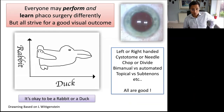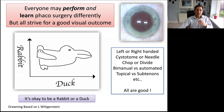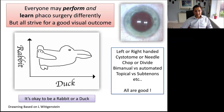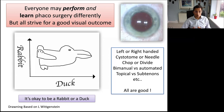Everyone may perform and learn cataract surgery very differently, but we all strive to have a really good-looking eye and beautiful vision. Like the duck-rabbit illusion, it doesn't matter which way you look at it. It doesn't matter whether you are right or left handed, use a cystitome or a needle, chop or divide, use manual or automated, topical or sub-Tenon's — all are good. People need to concentrate on the technique they have and learn it very well.